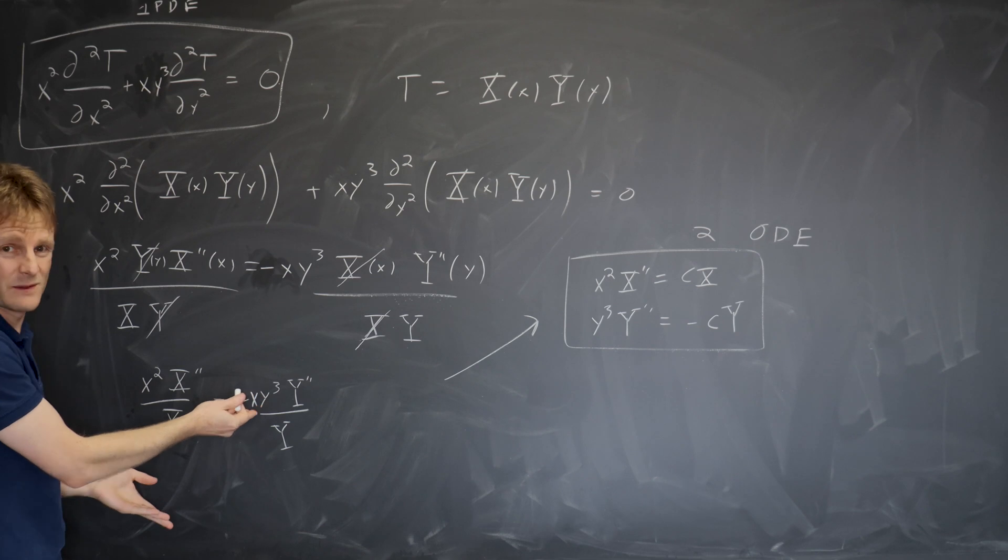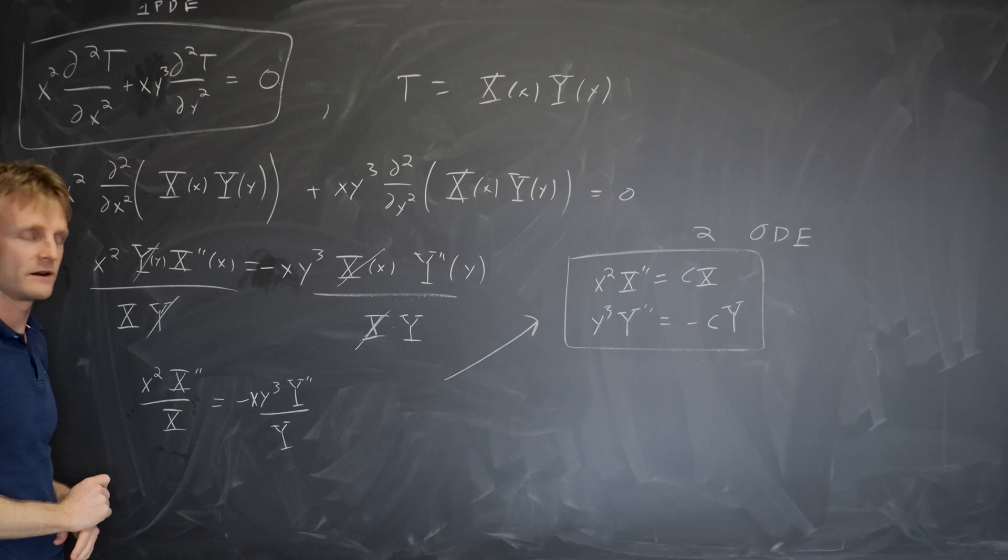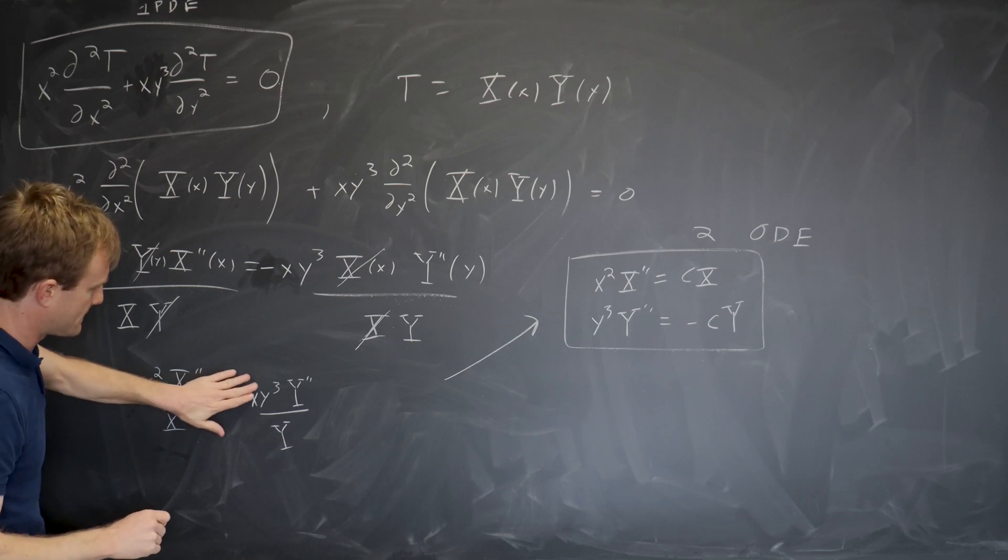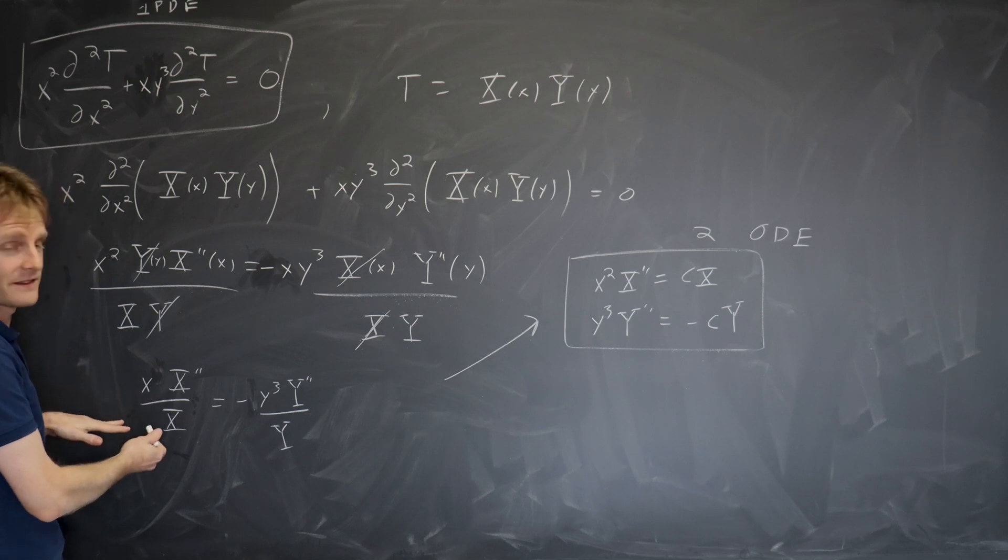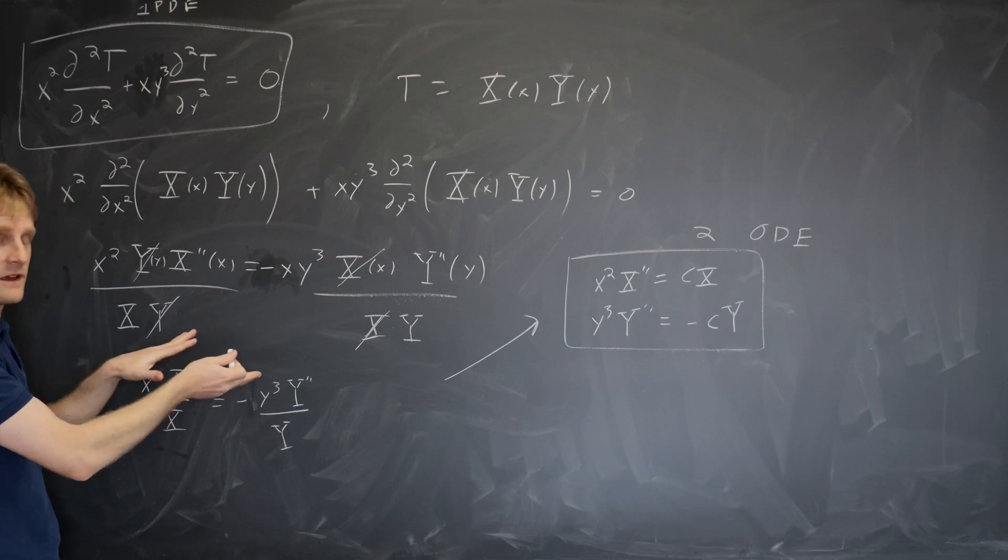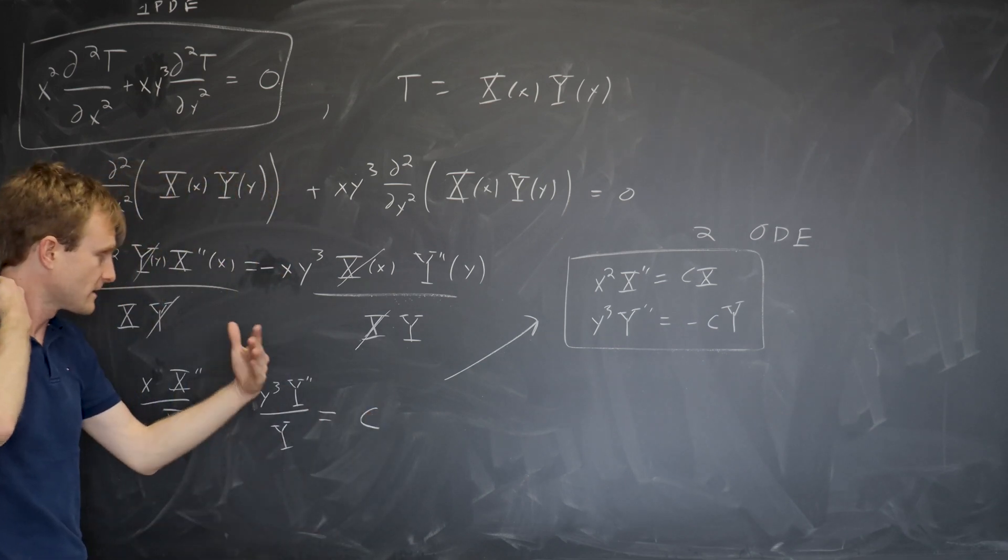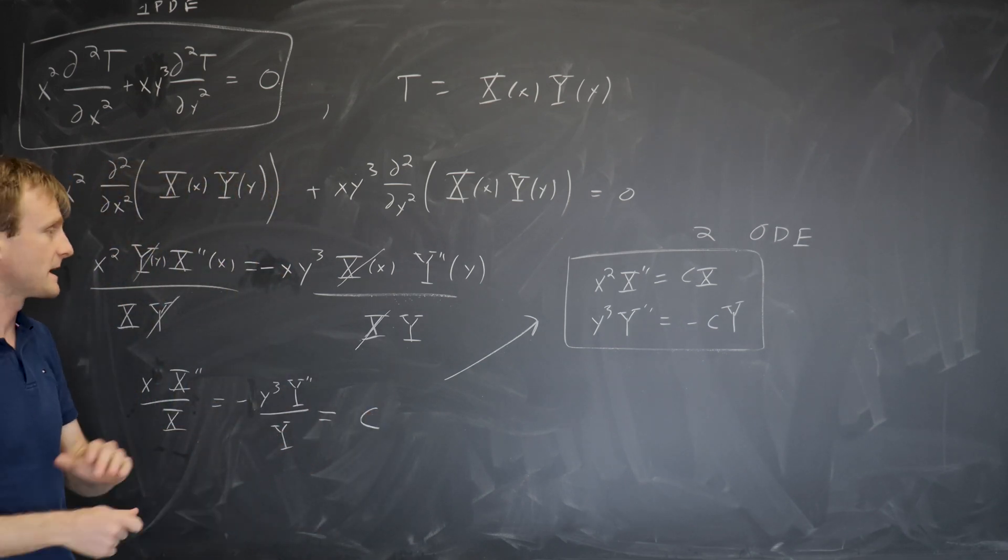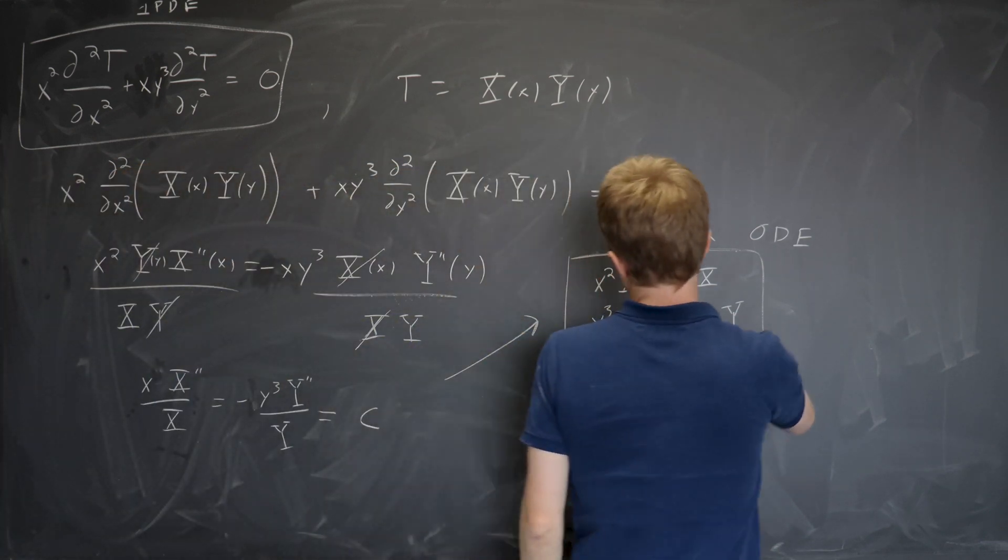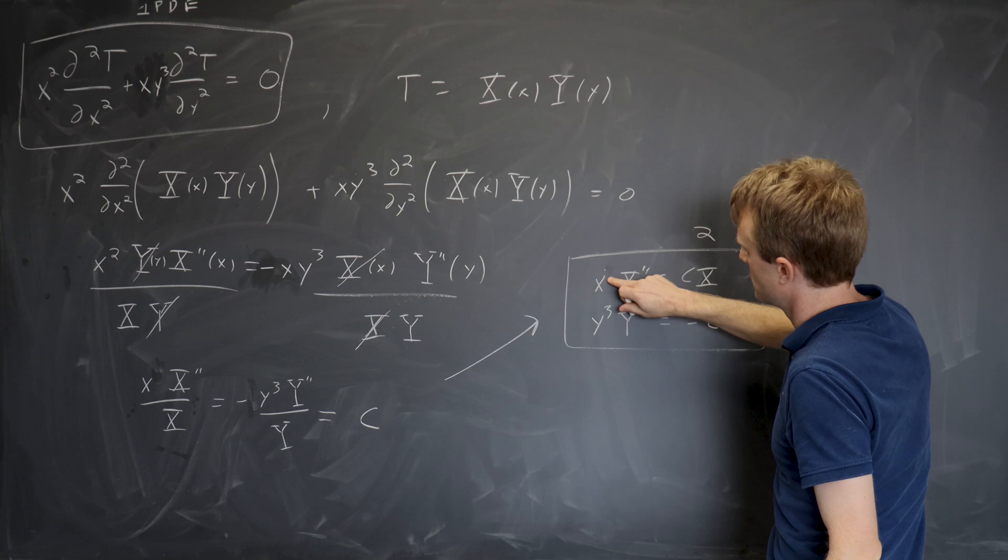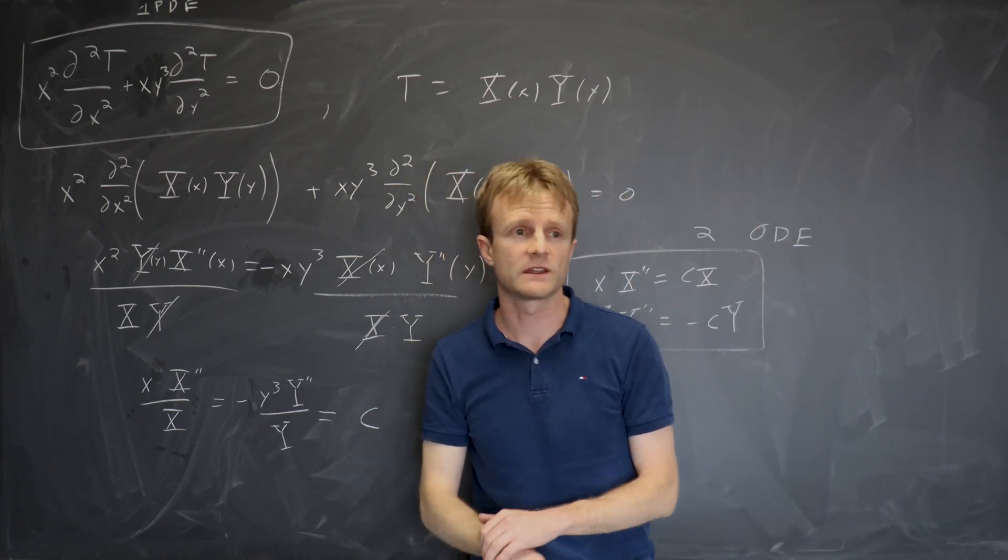It looks like we've failed because this side depends only on x and this side doesn't. It depends on x and y. But there's an easy fix. I just divide by another power of x. I take out this, take out that, and now the left-hand side is independent of y. It just depends on x. The right-hand side just depends on y. By the general argument, they're both equal to some constant independent of x and y. And then we go up here and the new differential equation was simply x times x double prime equals cx. And the y differential equation is unchanged.